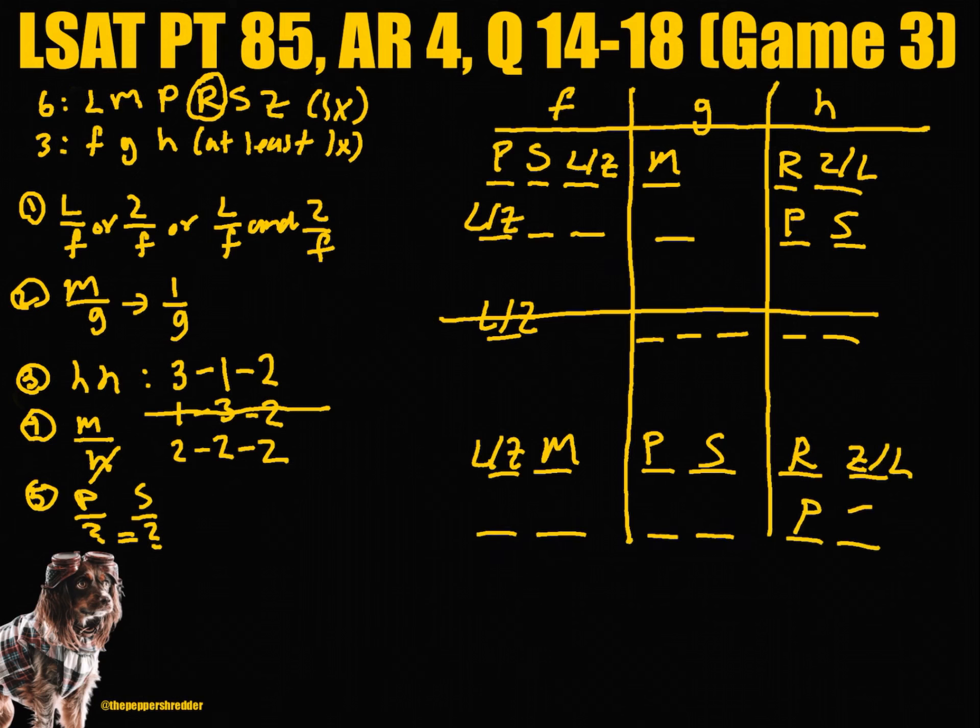In the last instance we can group P and S in group H. Only one of either L or Z must be grouped with F. Because M must be grouped with F to comply with rule 2, then R and either Z or L are left to be placed in group G.